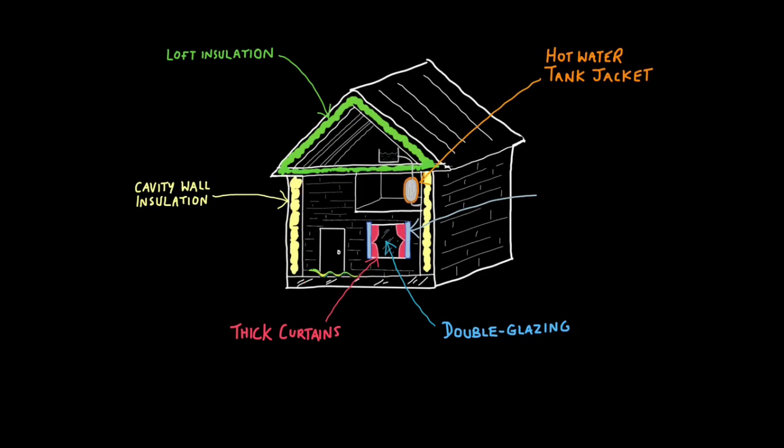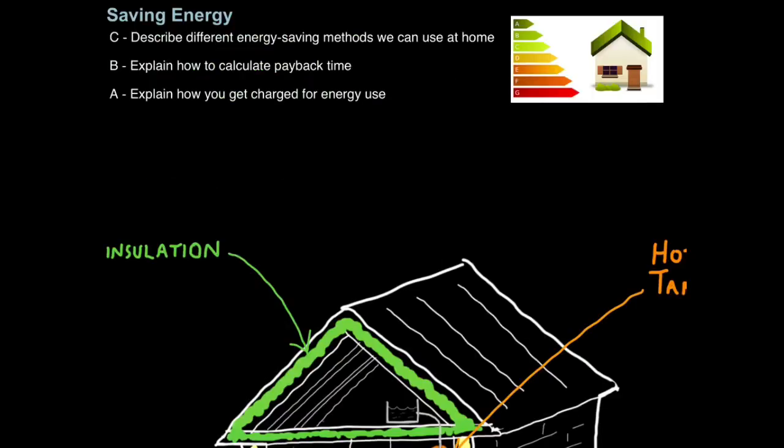And finally, many houses have spaces in between their walls. We call this a cavity, and if we fill that cavity with foam, then we have cavity wall insulation, which again reduces the amount of heat that's escaping our house. All these strategies keep our house warmer for longer, and therefore save money. And that's how we describe different energy saving methods we can use at home.